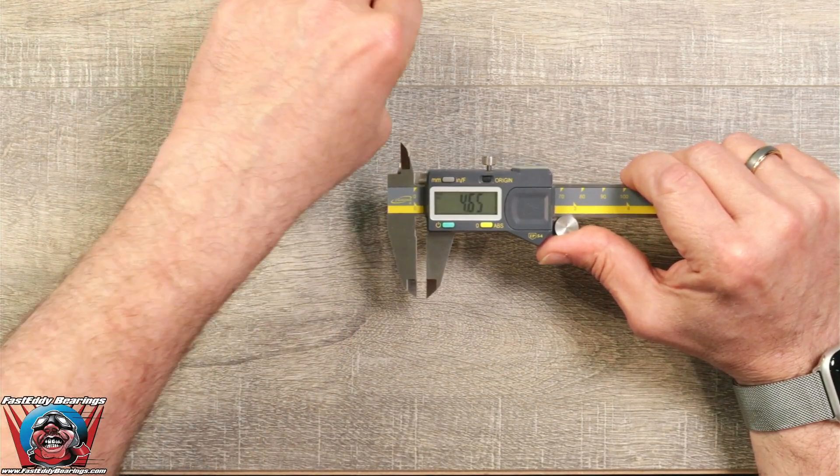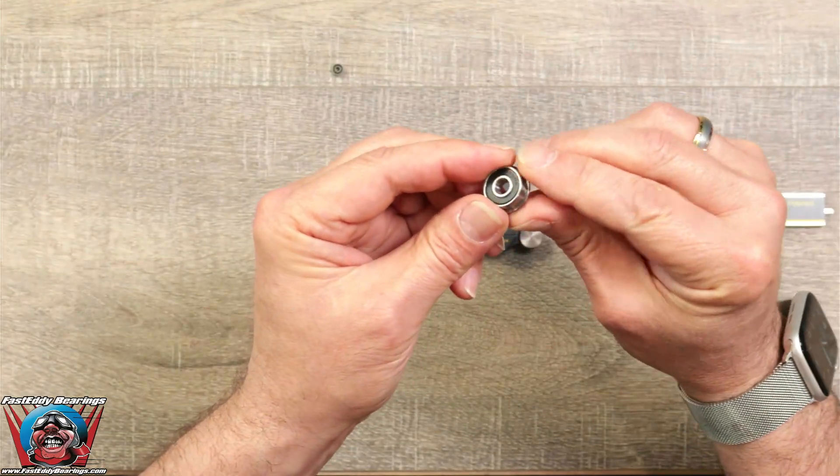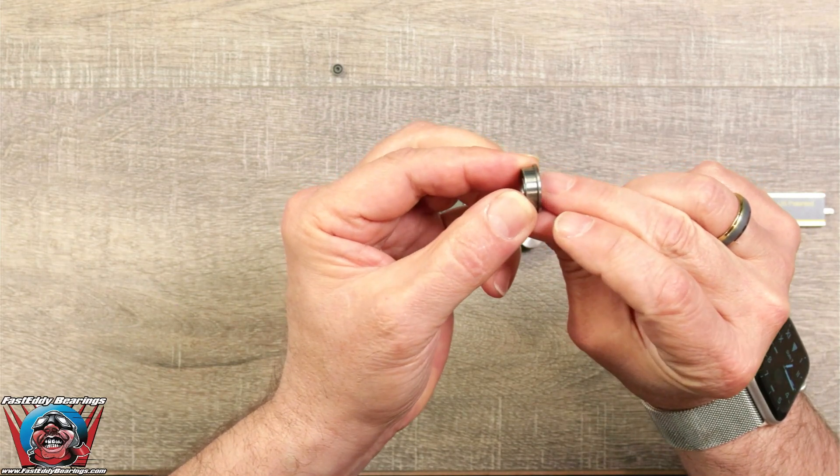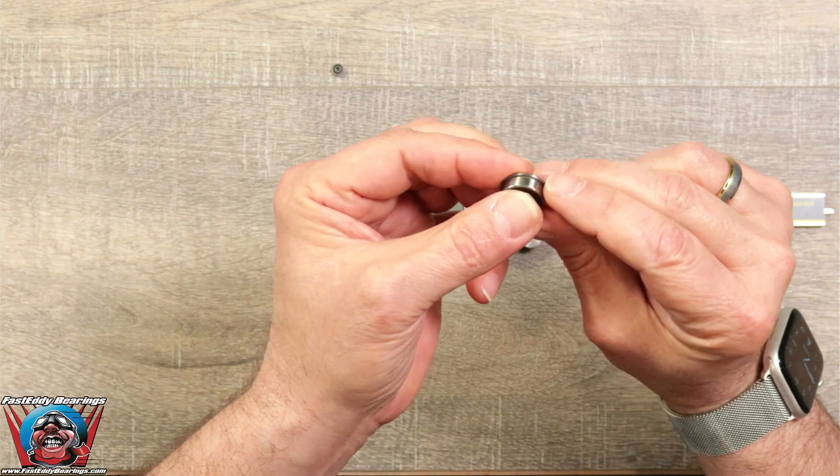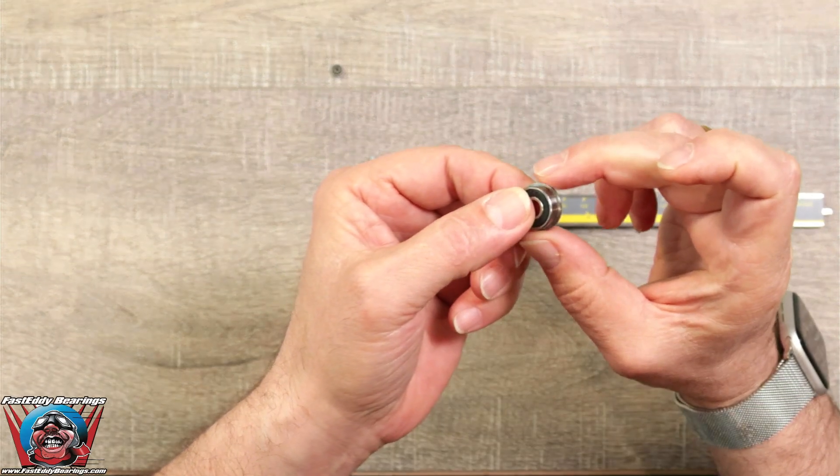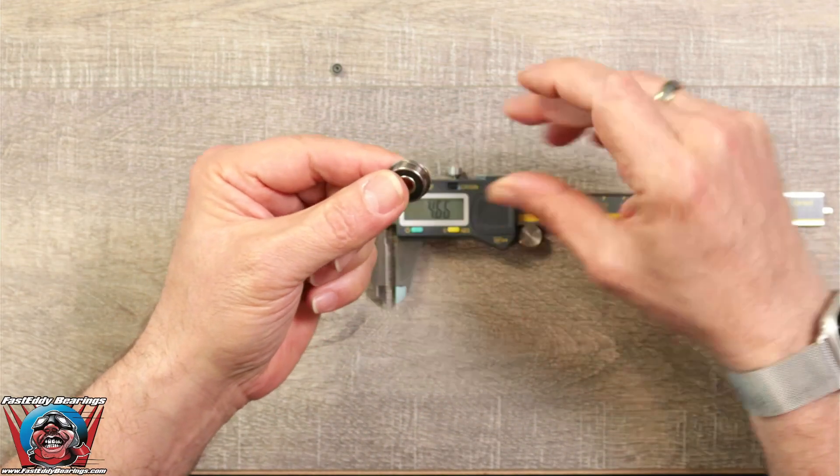Now, some bearings are what they call a flanged bearing. And you can see here that there is a flange that goes around the bearing. You're going to measure this bearing the same exact way as you do a standard bearing, and you're not going to measure the flange. The flange itself is an industry standard size.